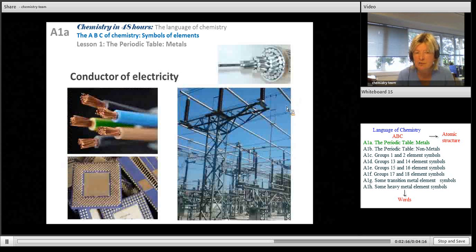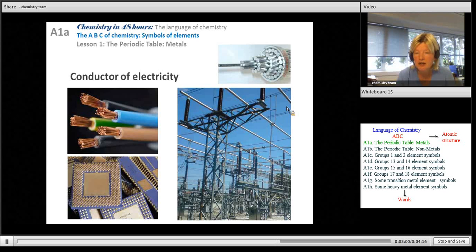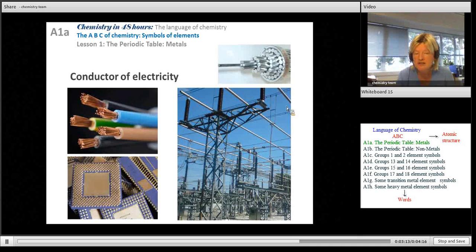Here we see examples of metals as conductors of electricity. Copper and gold again are very useful in this field; they're very good conductors. So you'll find copper wiring in your homes, you'll find gold is used in the electronics business like in your computer because it's a really good conductor.